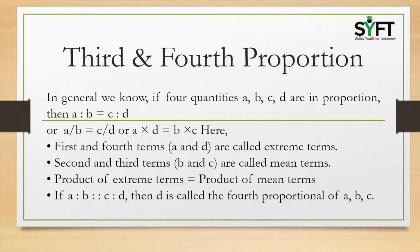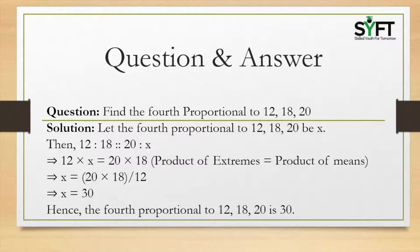If a is to b, c is to d, then d is called the fourth proportional of a, b and c. Question 1: Find the fourth proportional to 12, 18 and 20.